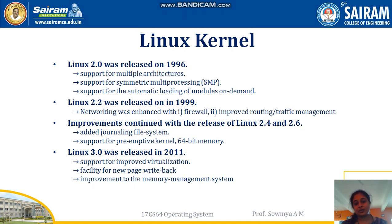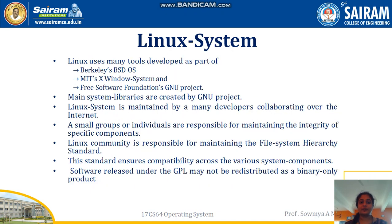Linux 3.0 was released in 2011, supporting virtualization, a new page writeback system, and improved memory management. Linux is based on Unix, and uses main tools developed as part of Berkeley BSD OS, the X Windows system, and free software funded by GNU Projects. Main system libraries are also created by GNU Projects.